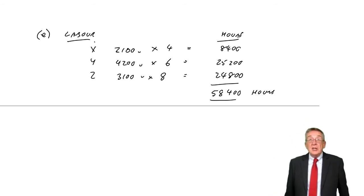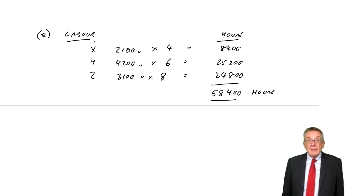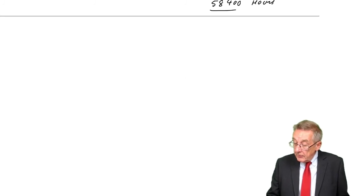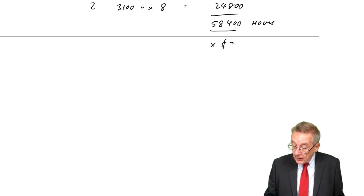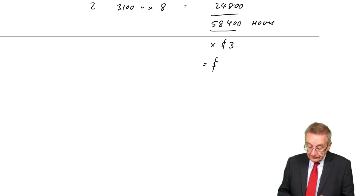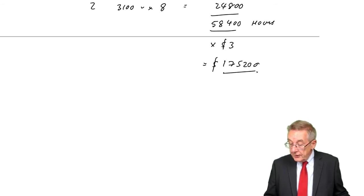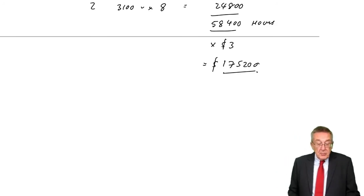The person in charge of labour will need two things. They'll need to know how many hours we need to make sure we have enough workers employed. In addition, they'll need their target for how much we should be spending. Labour's paid at $3.00 an hour, so their expenditure budget is $175,200. I hope that's clear and not too much of a problem.